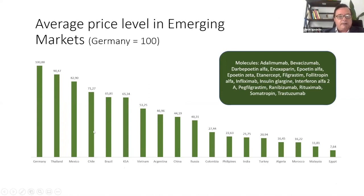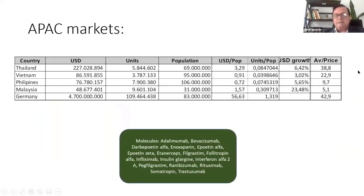Regarding average prices, again comparing with Germany, some markets like Thailand still have very high prices compared to Germany, which could be one reason for low intake. But even in other markets with lower prices, access to products is still quite low. The average prices between different markets are not so different when compared against each country's GDP average.